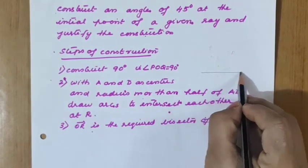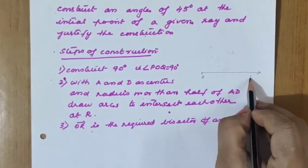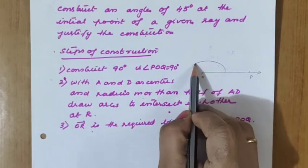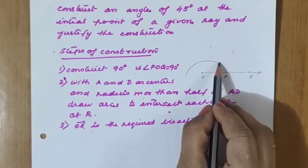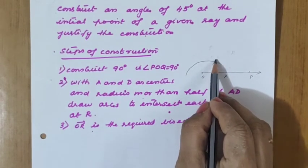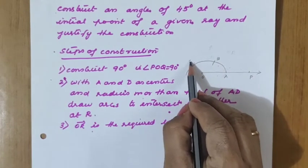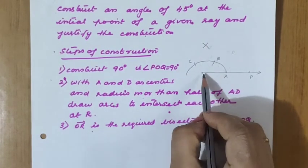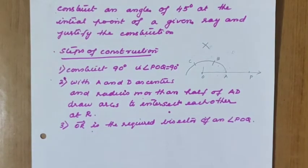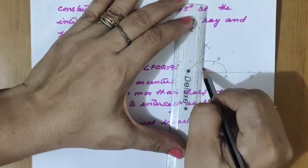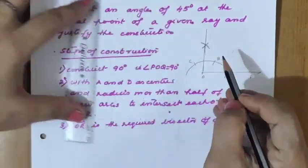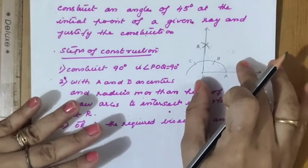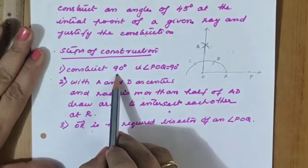According to the question, an initial ray is given, so let us take ray OP. With O as center and a convenient radius, we draw a semicircle. Taking A as center, we draw one more arc, and with B as center another arc, cutting at a point. Using B and C we draw two more arcs to complete the 90 degree construction. We mark the resulting point as Q, so angle POQ equals 90 degrees.